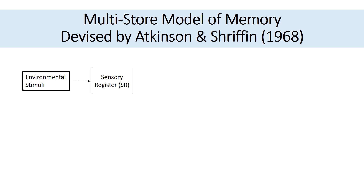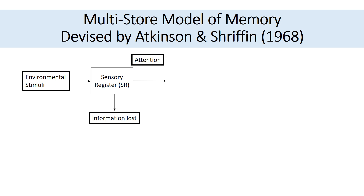The duration though is quite short. The sense impressions come in but then they're lost very quickly, because most of the sense impressions that come in don't need to be consciously considered. So as soon as the information is in, it's pretty much lost. However, some parts of the environment are important to us and those parts we pay attention to. If we pay attention to information in the sensory register, it will then move to our short-term memory.